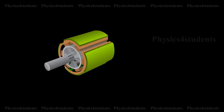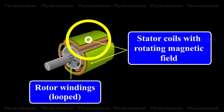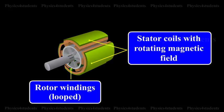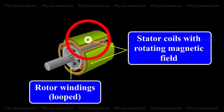Eddy currents are produced in a metallic cylinder called rotor when it is placed in a rotating magnetic field. The eddy current initially tries to decrease the relative motion between the cylinder and the rotating magnetic field.